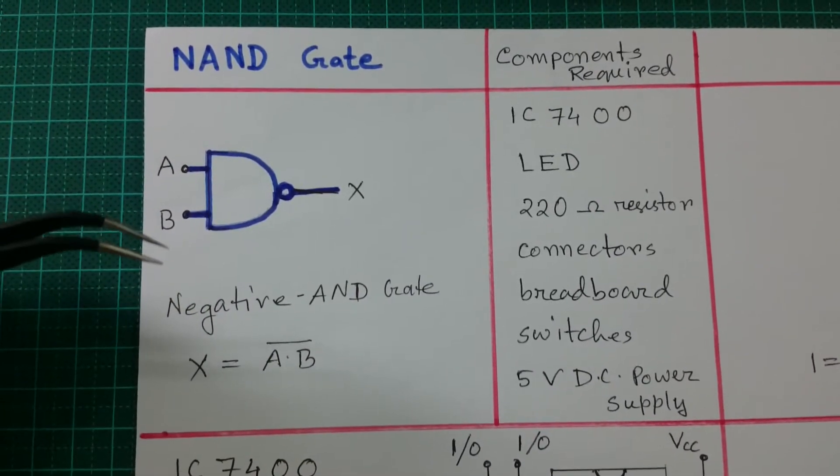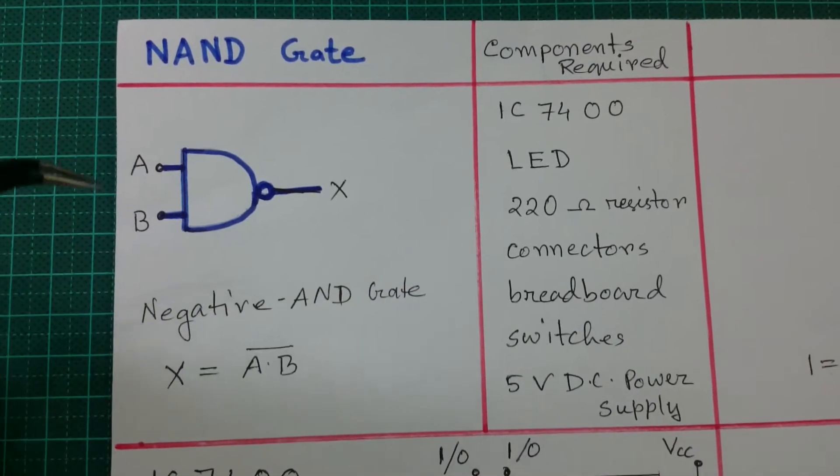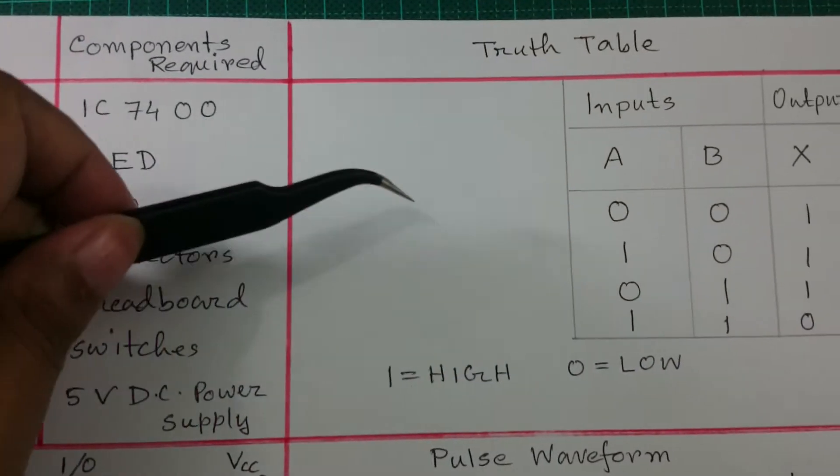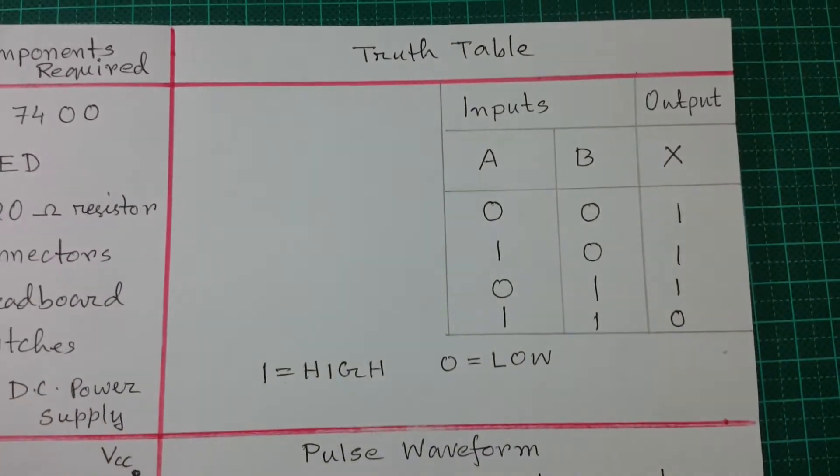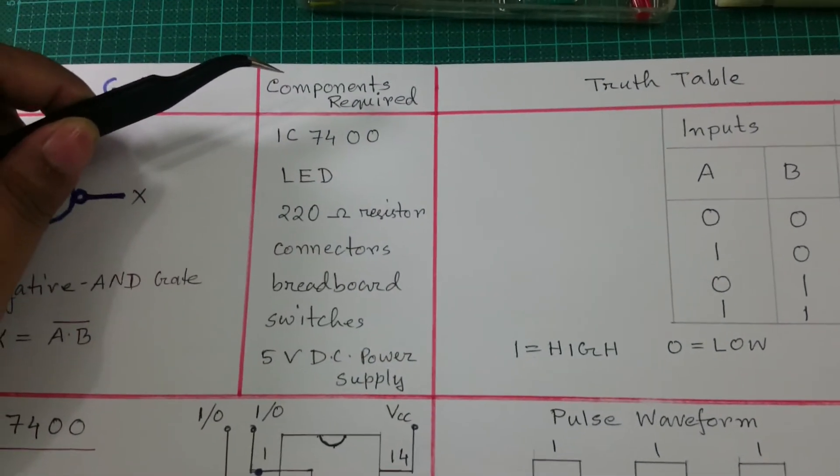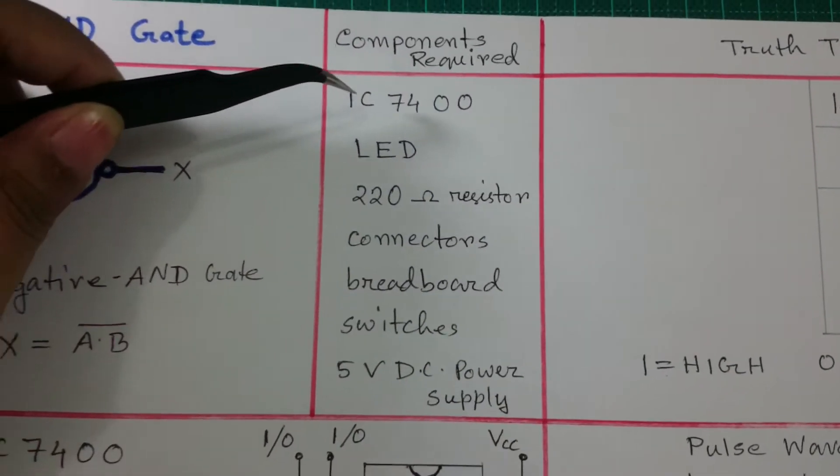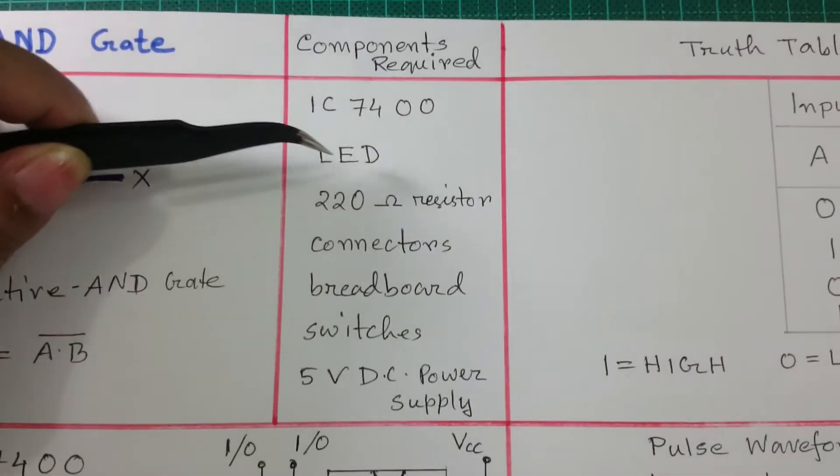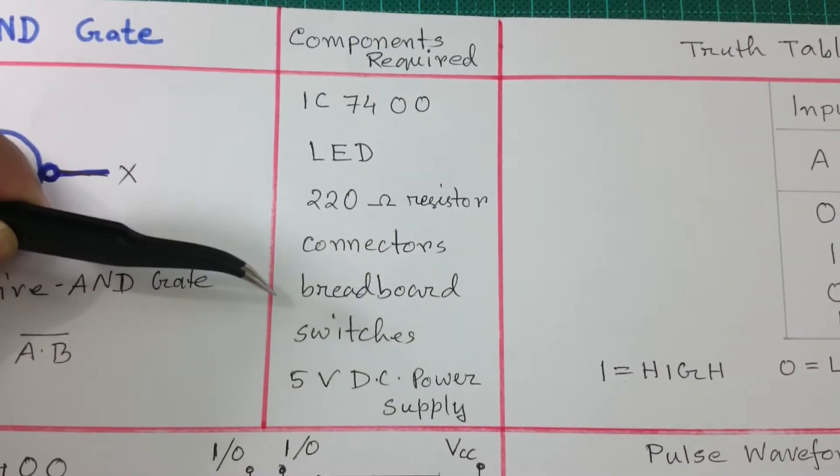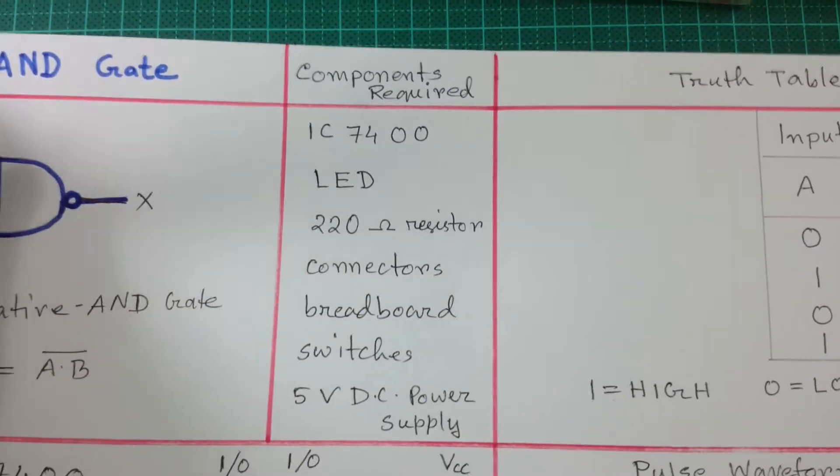Today I am going to show you the circuit diagram and IC to utilize this NAND gate, and I will verify the truth table. The components required are IC 7400, one LED, a 220-ohm resistor, connectors, a breadboard, switches, and a 5-volt regulated DC power supply.